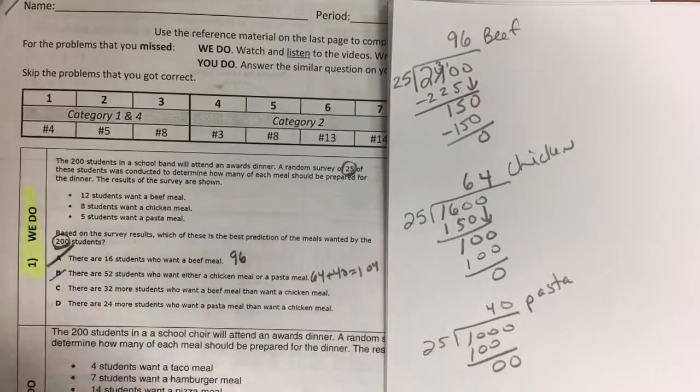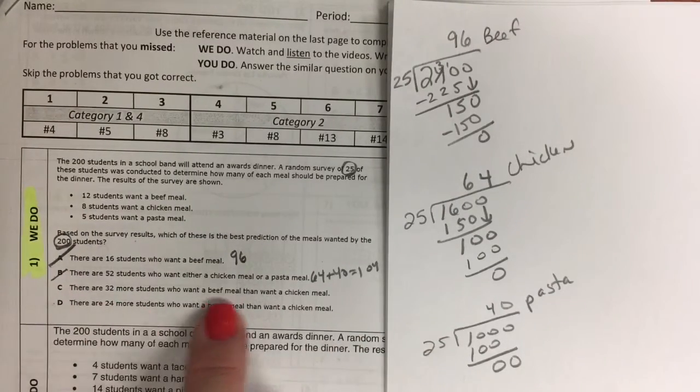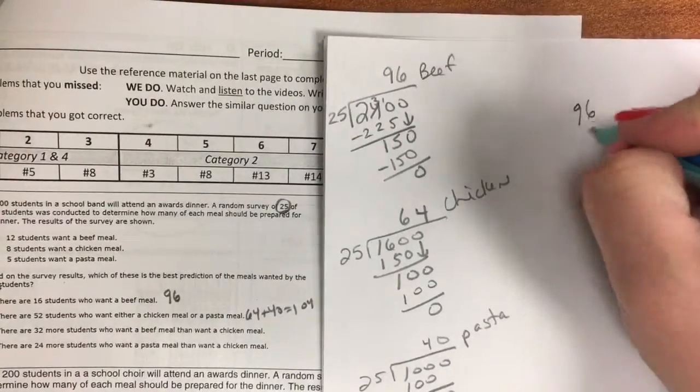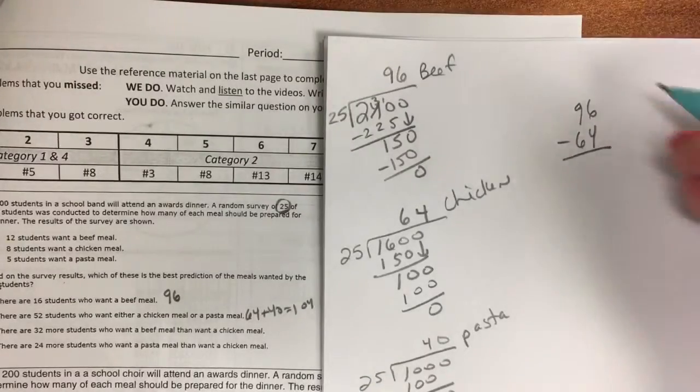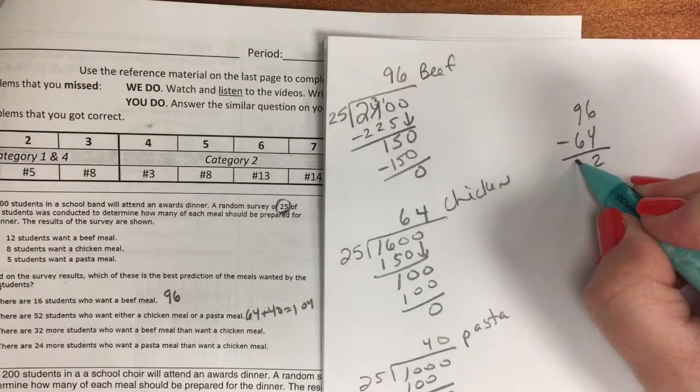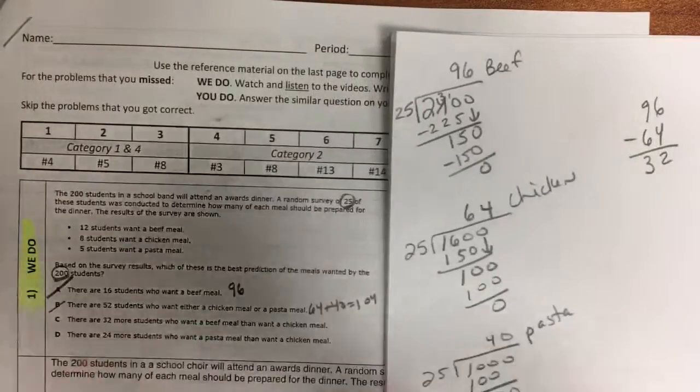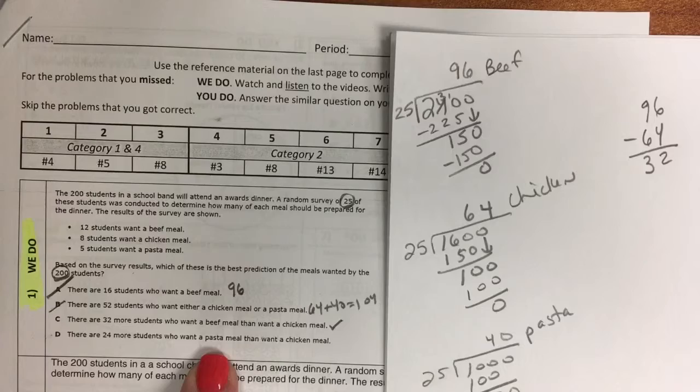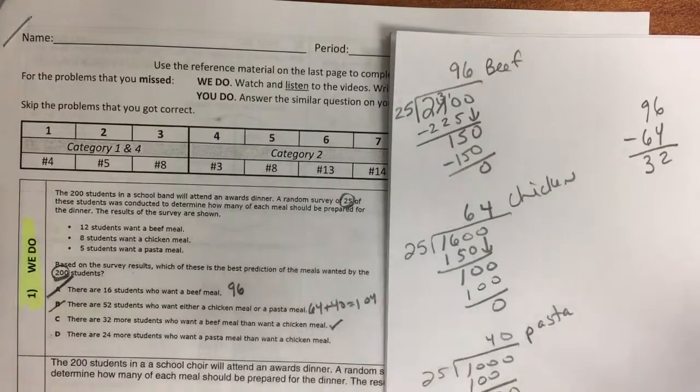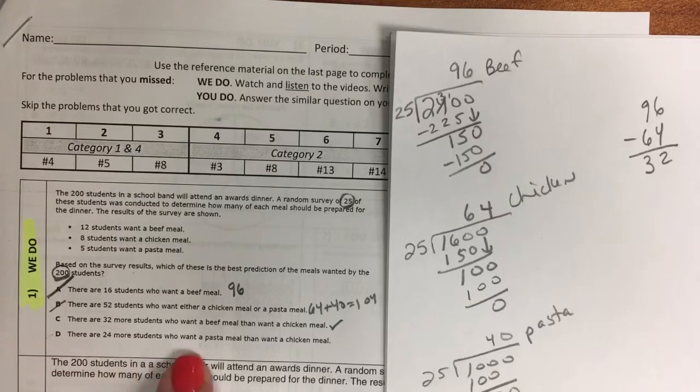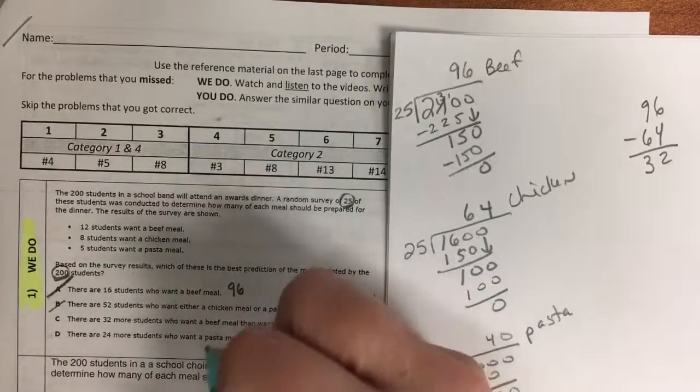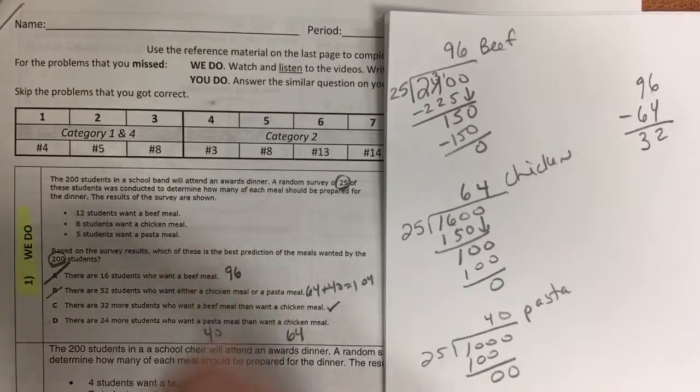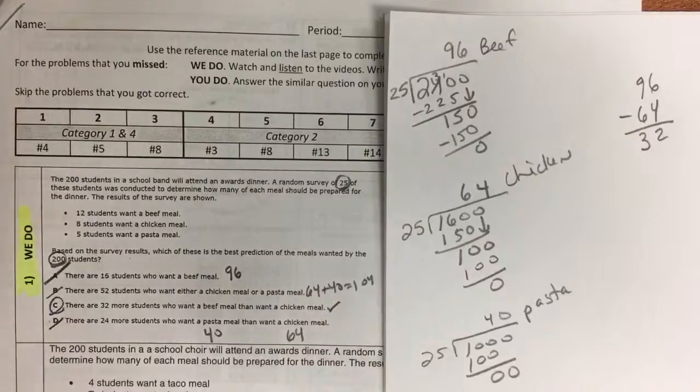32 more students who want a beef meal than a chicken meal. So I would subtract 96 minus 64 for the beef and the chicken, and I would get 32, which that would be correct. The last one, there are 24 more students who want a pasta meal than a chicken meal. Pasta is 40, chicken is 64. Do more students want pasta? No. So the only correct answer is C.